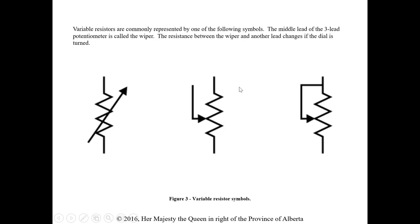Variable resistors are commonly represented by one of the following symbols. The middle lead of the three-lead potentiometer is called the wiper, and the resistance between the wiper and the other lead changes if the dial is turned. Basically, it's going to change the value of resistance depending on where that wiper is at the time.